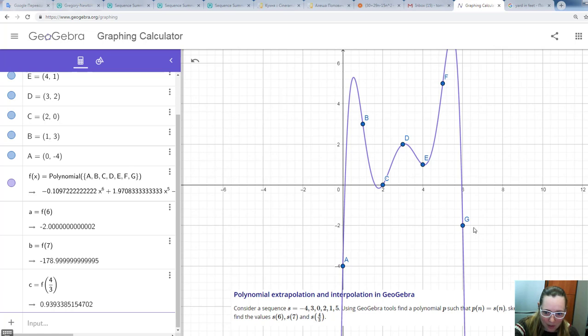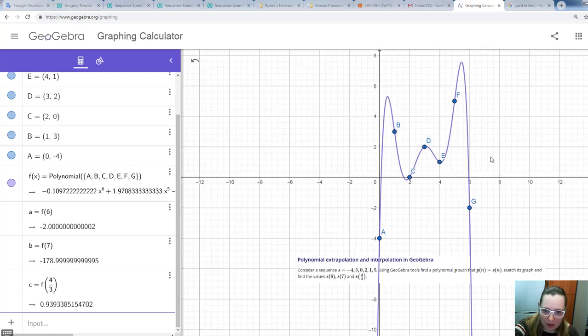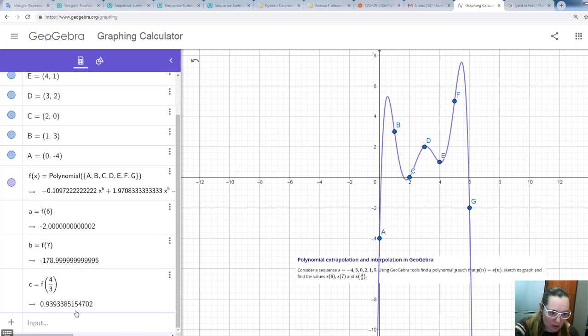And you see we already have the polynomial. The new polynomial is constructed. And the values also changed automatically.